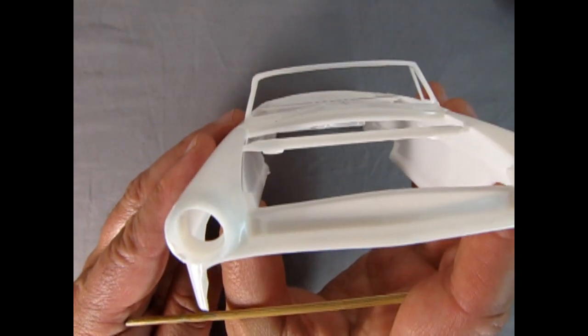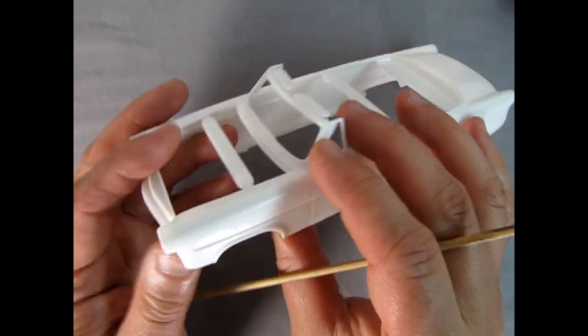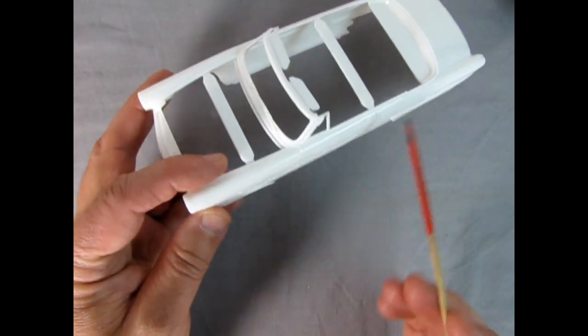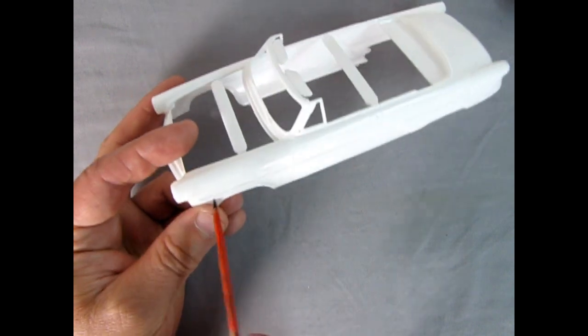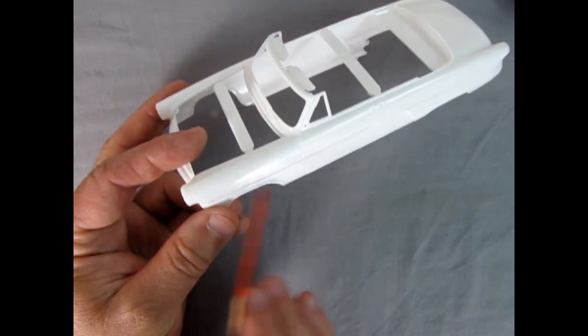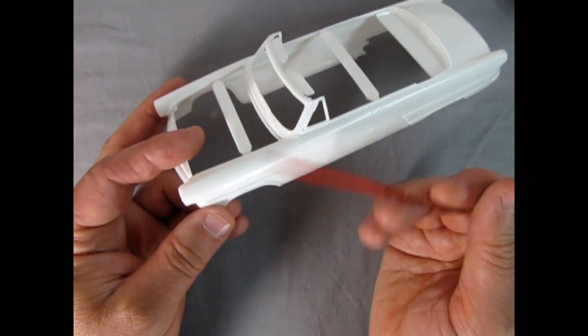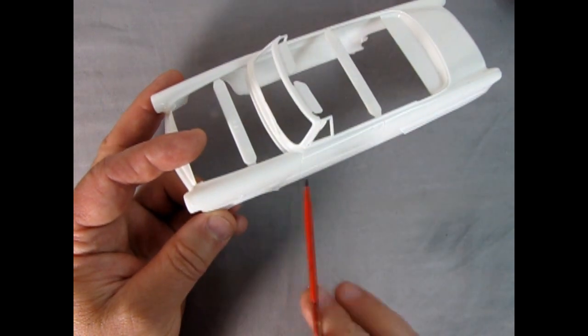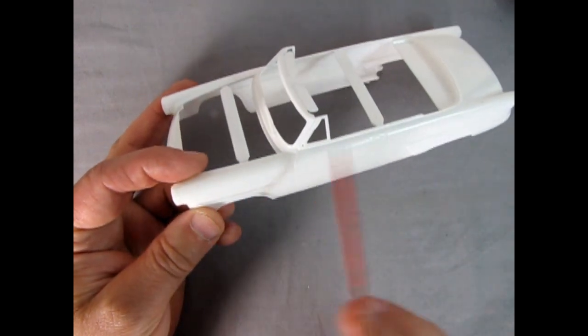Again the front end is nice and crisp. A bit of flash on it. A couple of seam lines running up along the body. Now you can get that out with your sandpaper by first sanding this way and then coming in this way for cross sanding, instead of going back and forth which always causes problems.